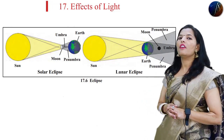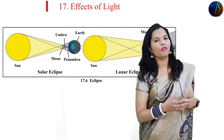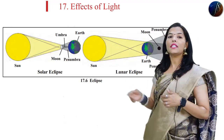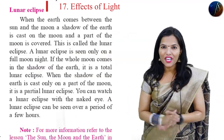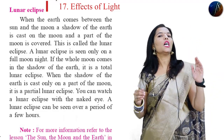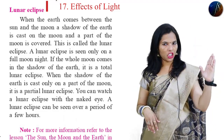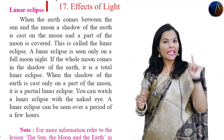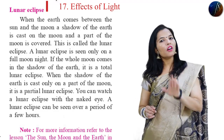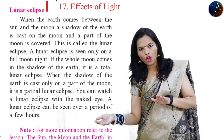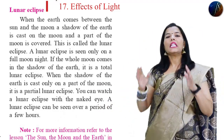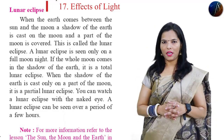So, what is the definition? If in the exam you have to answer the question, what is the lunar eclipse, at that time you have to write down this definition. So, what is the definition of lunar eclipse? That is: when the Earth comes between the Sun and the Moon, then at that time the shadow of Earth is cast on the Moon, and a part of the Moon is covered.